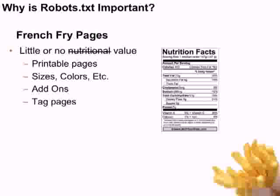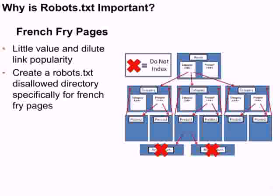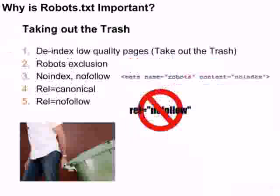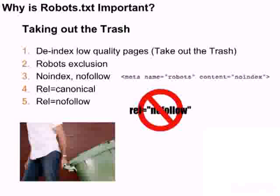We're going to block those with robots.txt using the syntax shown earlier. The main issue with these French fry pages is that they potentially dilute link popularity by sending internal link equity to pages that really don't need to be indexed, and it can cause confusion and other problems. So we fix this with robots.txt — we create a disallowed directory and block some of these. Robots.txt isn't the only solution to reducing duplicate content and index bloat. When I say index bloat, I mean the amount of pages in the Google search index that don't need to be there.